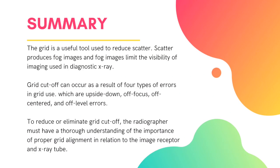In summary, the grid is a useful tool used to reduce scatter. Scatter produces foggy images, and foggy images limit the visibility of imaging used in diagnostic x-ray. Grid cutoff can occur as a result of four types of errors in grid use: upside-down, off-focused, off-centered, and off-level errors. To reduce or eliminate grid cutoffs, the radiographer must have a thorough understanding of proper grid alignment in relation to the image receptor and the x-ray tube.